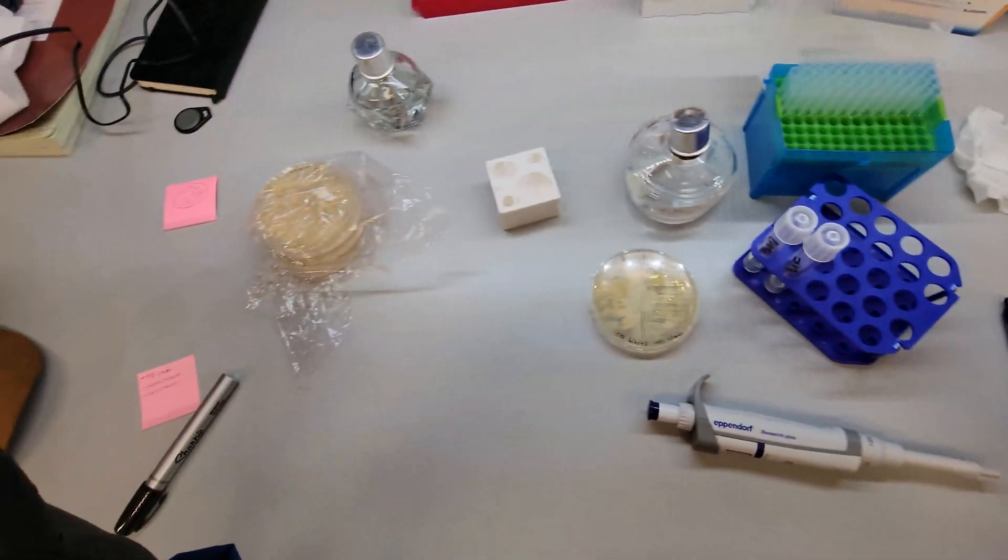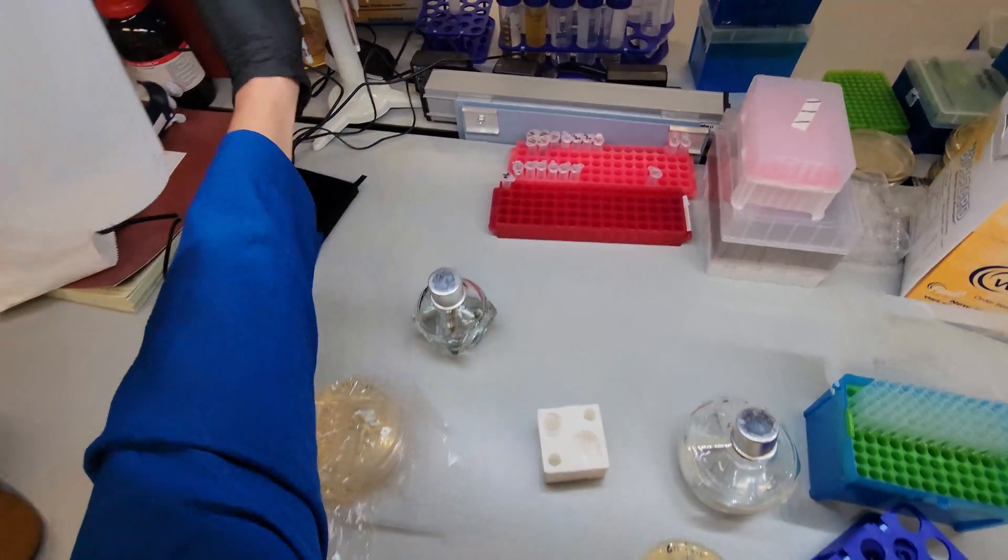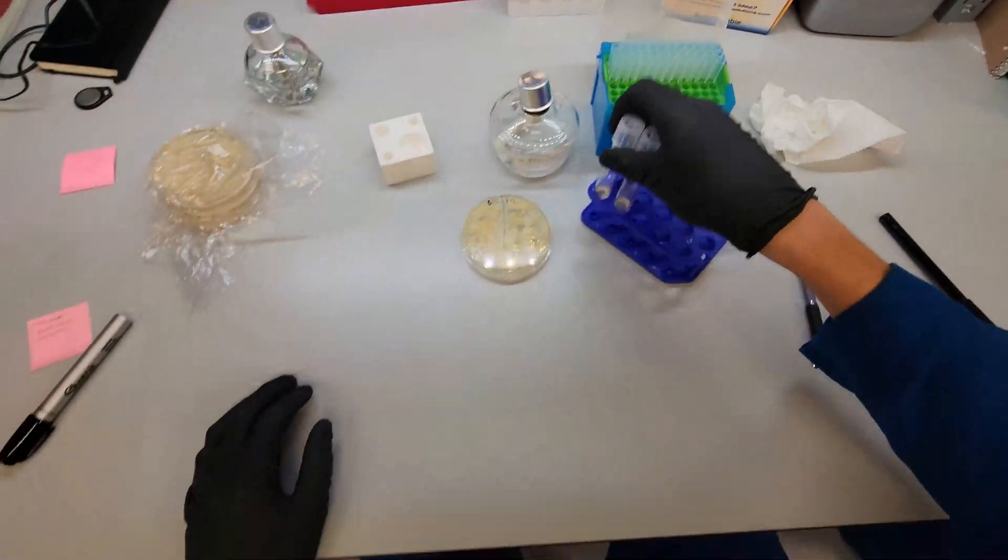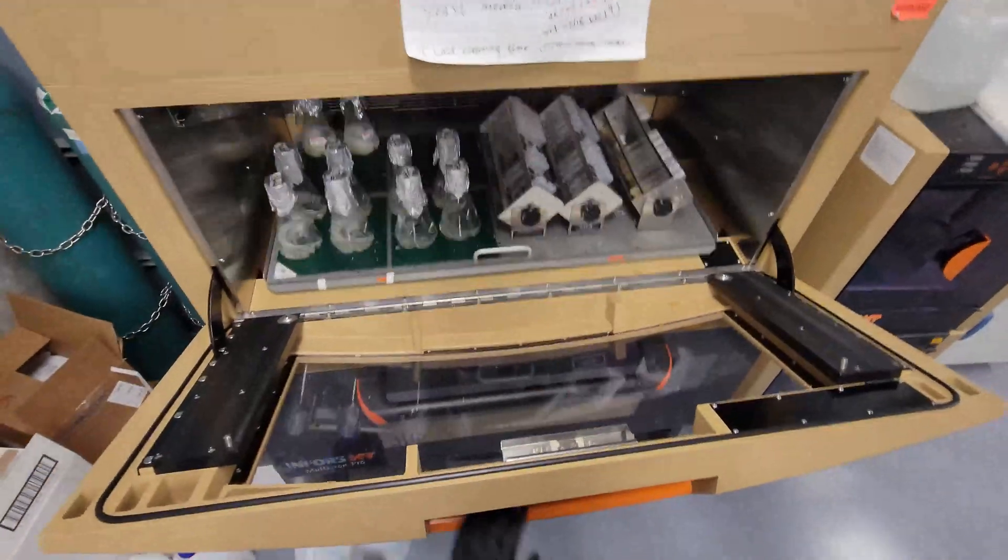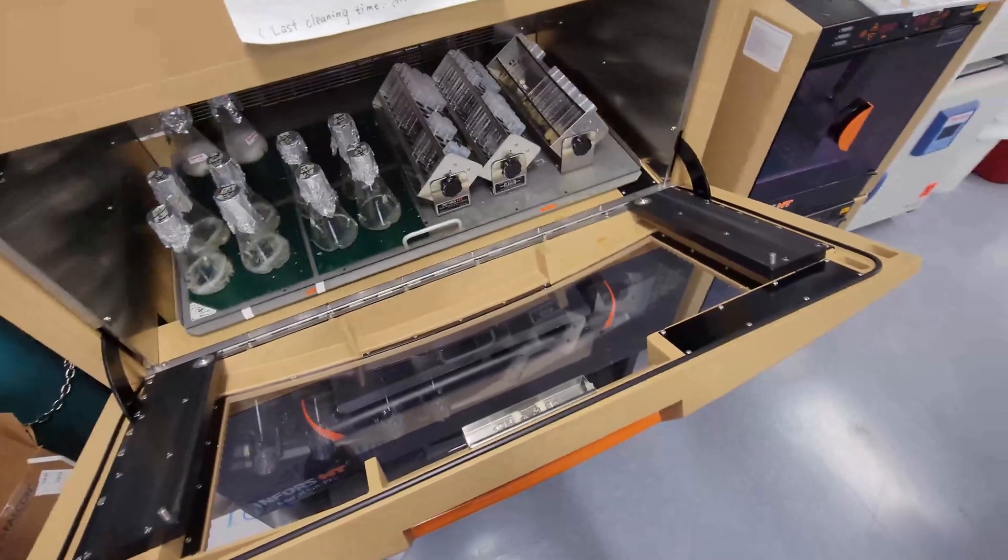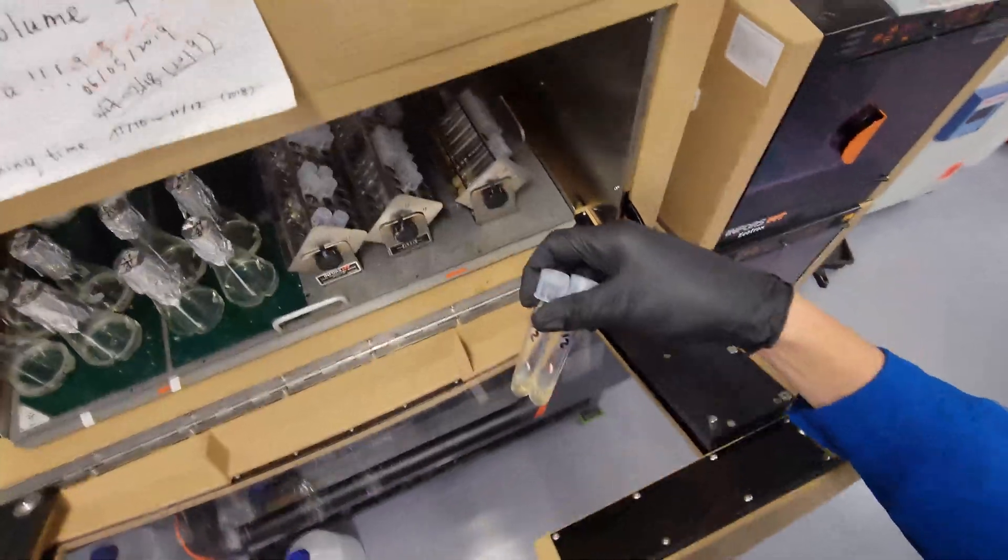But yeah, that's it. That's how you inoculate the cultures. So you can take them and put them in your shaker incubator. This is our pizza oven style shaker incubator. This is at 30 degrees Celsius. By the way, this organism is Yarrowia lipolytica, just an oleaginous yeast.